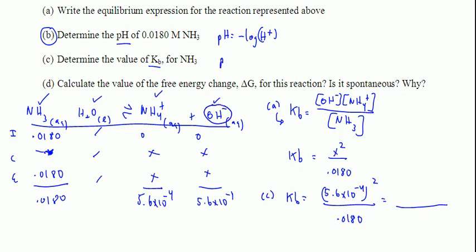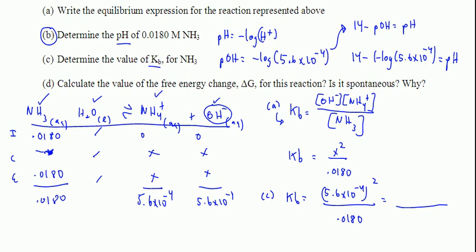We can actually calculate the pOH, which would be the negative log of 5.6 times 10 to the minus fourth. And 14 minus the pOH would equal the pH. So 14 minus the negative log of 5.6 times 10 to the minus fourth equals the pH. That's the answer to B.